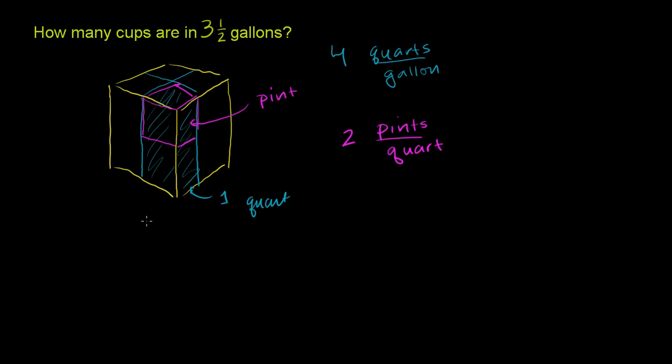Finally, there are 2 cups per pint. So this pint right here, I can divide it into 2, and each of these will be a cup. This section right here will be a cup. We could go straight and figure out exactly how many cups there are per gallon.